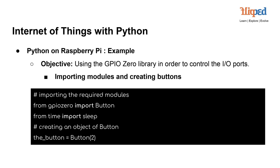Here is an example of how to use Python on a Raspberry Pi to control the I/O ports using the GPIOzero library. The objective is to demonstrate how to interact with external hardware connected to the Raspberry Pi's GPIO pins. The first step is to import the necessary modules: GPIOzero, a Python library that simplifies working with GPIO pins, and time, a standard Python module used for adding delays in the code.